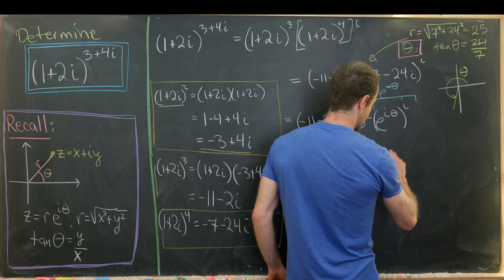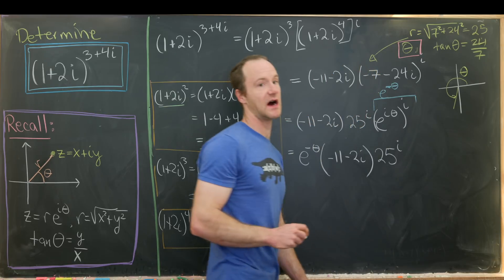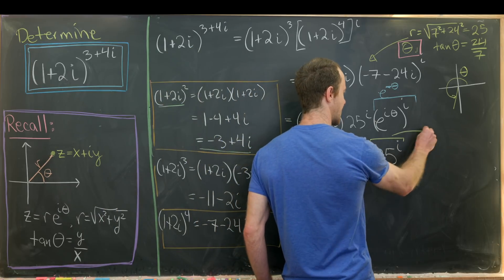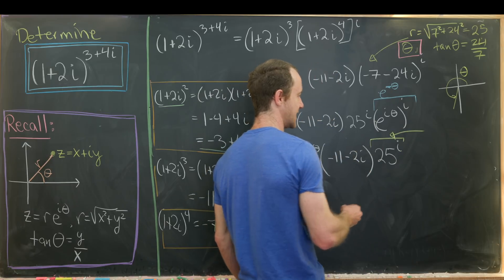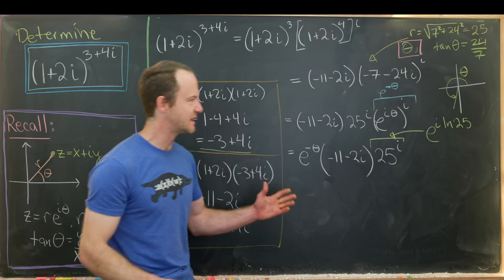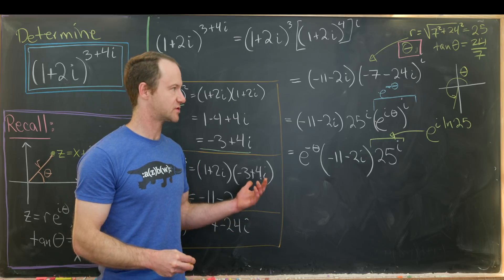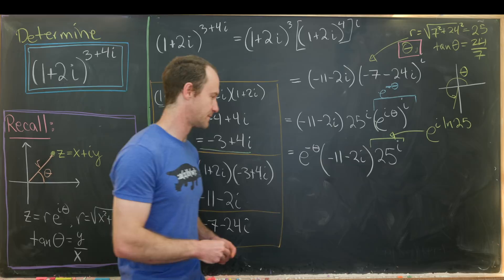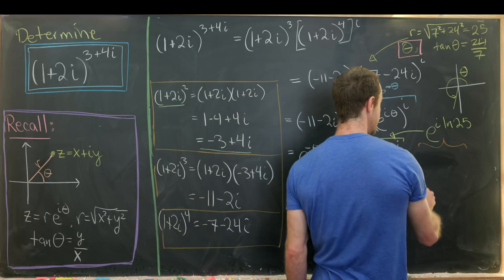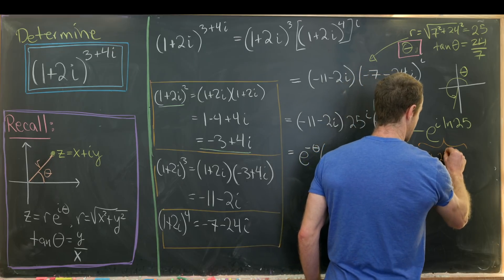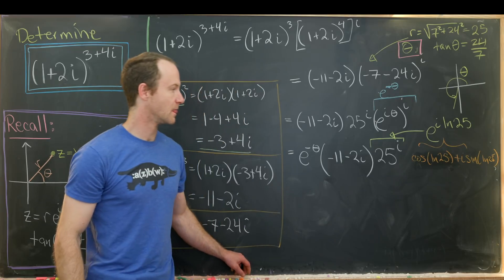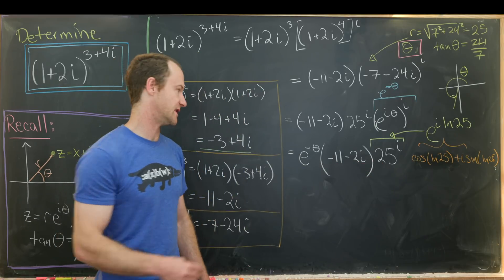And then before you forget about it, we also have to calculate this 25 to the i power. But this is actually a little bit tricky, 25 to the i. We're going to use a little bit of a trick for rewriting exponentials. So 25 to the i is the same thing as e to the i times the natural log of 25. And that's because e to the natural log of 25 is just 25. And so that gets back to this. But then from here, we can expand this using Euler's formula. So doing that, we'll get the cosine of the natural log of 25 plus i times the sine of the natural log of 25. So that's, in fact, what this 25 to the i is.